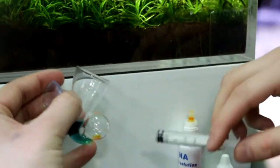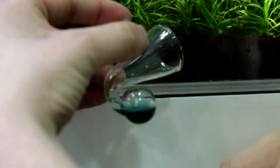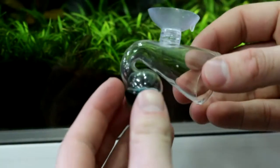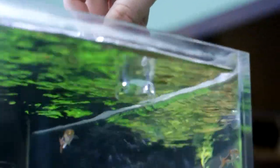Make sure you're vertically turning the drop checker to avoid spilling any reagent or water. Then put it inside the aquarium. You should see a small air bubble form inside - that's what you want.